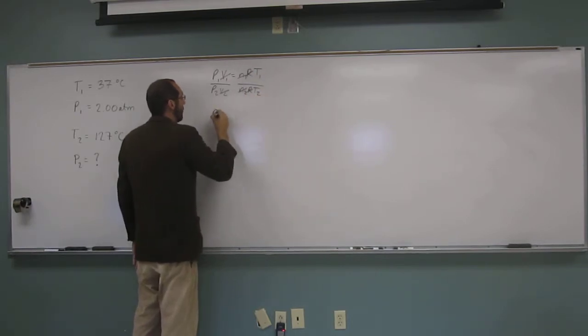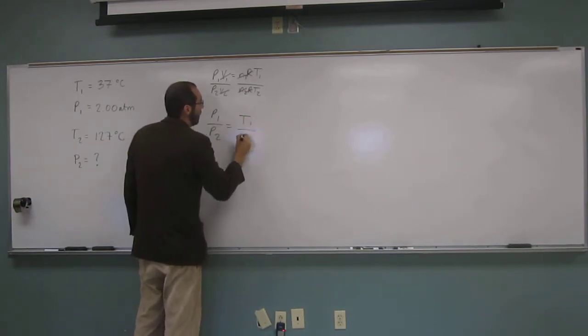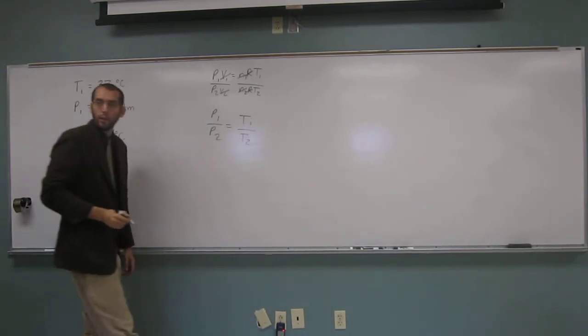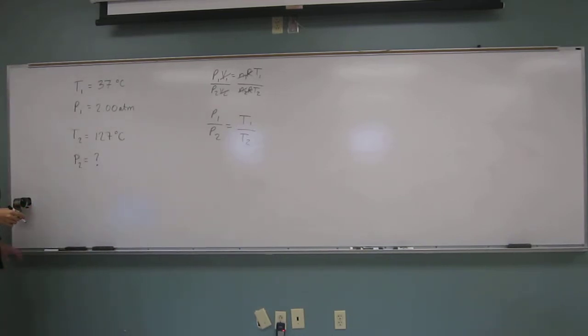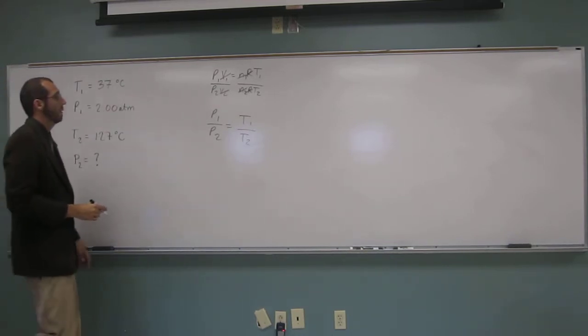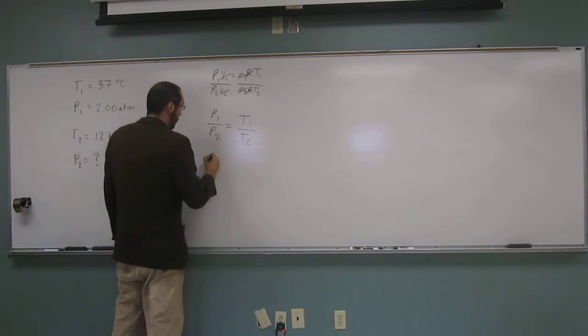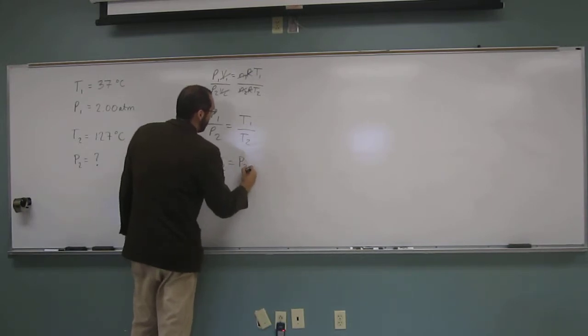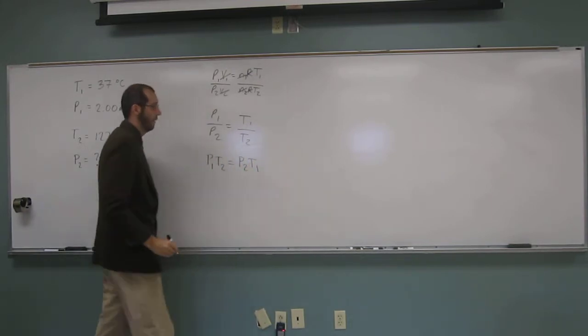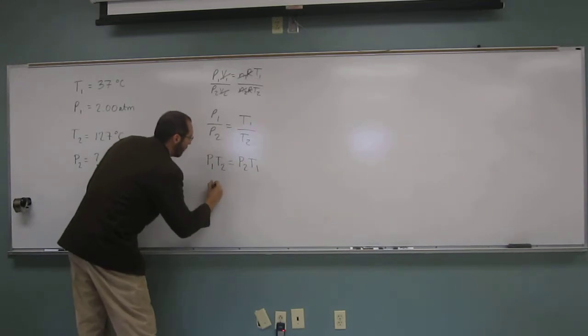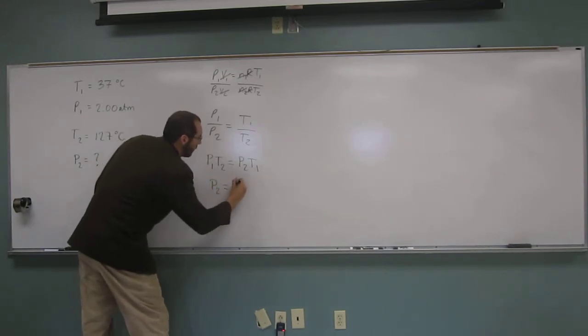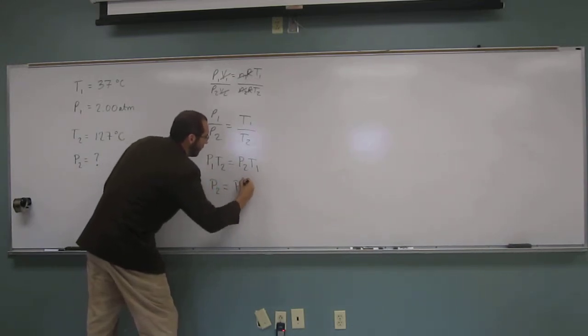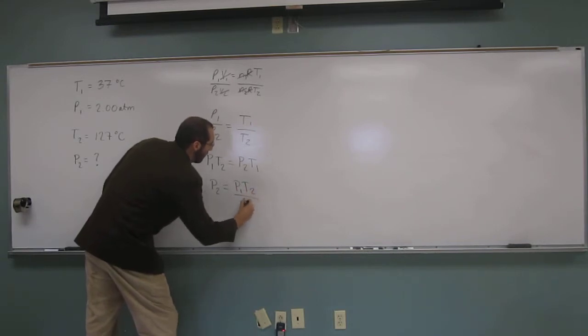So our new equation is P1 over P2 equals T1 over T2. So what are we looking for, P2? Let's rearrange this equation. So P1 T2 equals P2 T1. So P2 equals P1 T2 divided by T1.